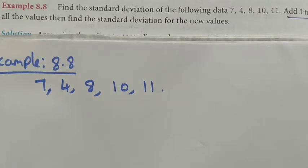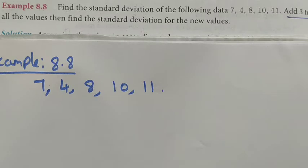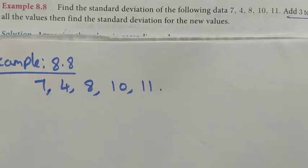Hi students, Class 10 Example 8.8: find the standard deviation of the following data. The data is given as 7, 4, 8, 10, 11. Clearly the given data is ungrouped data. Then add 3 to all the values and find the standard deviation for the new values.